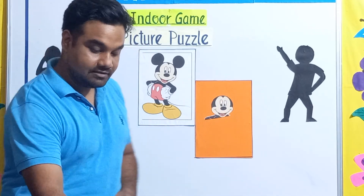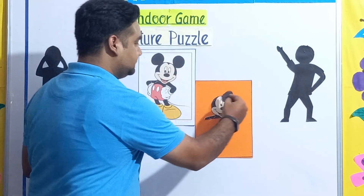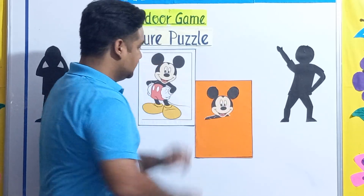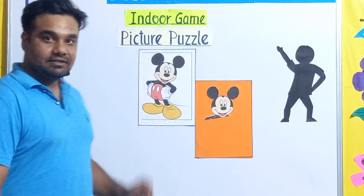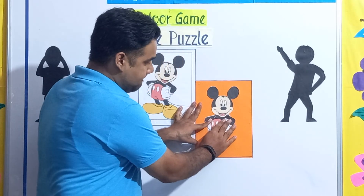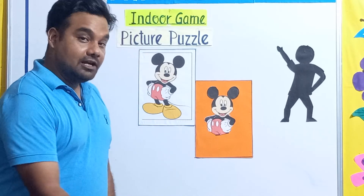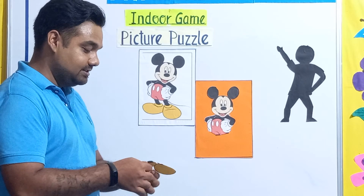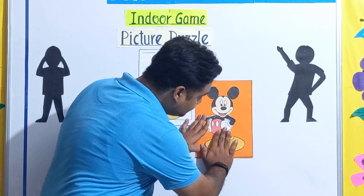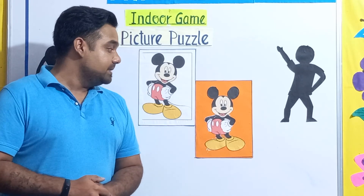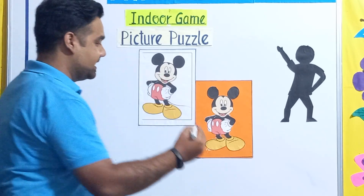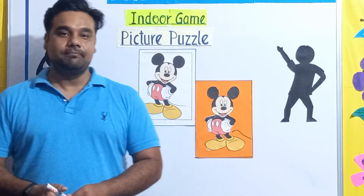Now next we are going to put the ears. Now, what should we put next children? Yes, his body. Now next, what's missing? Yes, his legs — here I have his legs. So Mickey Mouse is complete! But wait, what is still missing? Can you see? Yes, his tail! So you can take a pencil and draw his tail. This is how we play picture puzzle.